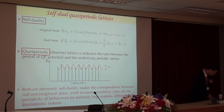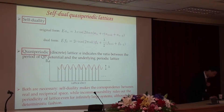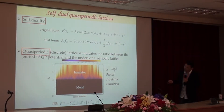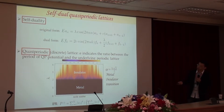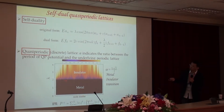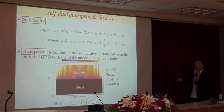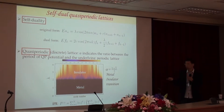This is the phase diagram of the Aubry-André model. The color indicates the inverse participation ratio (IPR) of the eigenstate. When the modulation strength lambda is smaller than 2, the IPR approaches 0, indicating delocalized states. When lambda is larger than 2, the IPR approaches 1, indicating a localized state.